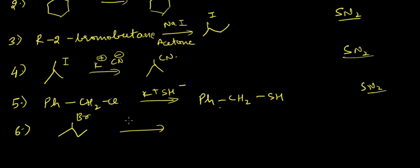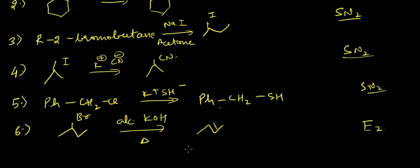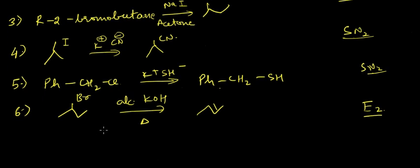In the next case, the reaction is in the presence of alcoholic KOH with heat, giving an elimination product. This is an E2 reaction. Had it been ethanolic KOH without heat, the OH would have substituted at the position of Br, making it an SN2 example.